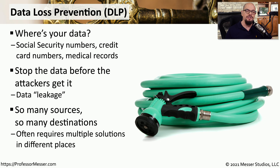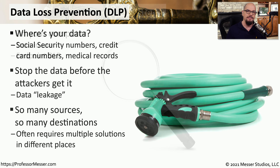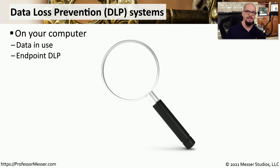There are so many places to obtain and store this information on our network, so we need intelligent systems called Data Loss Prevention, or DLP, that are able to look in many different locations and protect our data from prying eyes. An endpoint DLP solution would reside on our local workstations and devices, examining everything that is being transferred into or out of our device.